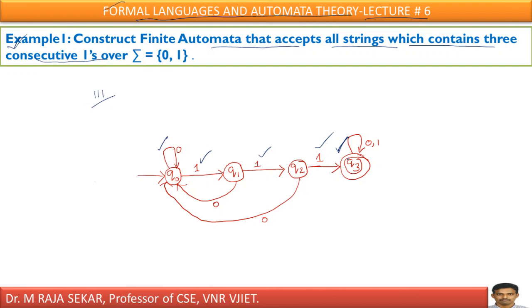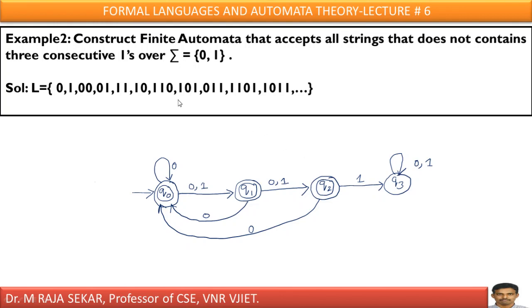What about example 2? Construct finite automata that accepts strings that do not contain 3 consecutive 1s. Just example 2 is opposite to example 1.